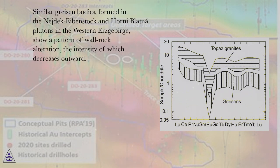Similar greisen bodies formed in the Natickibenstoke and Horniblotna Plutons in the western Erzgebirge show a pattern of wall rock alteration, the intensity of which decreases outward.